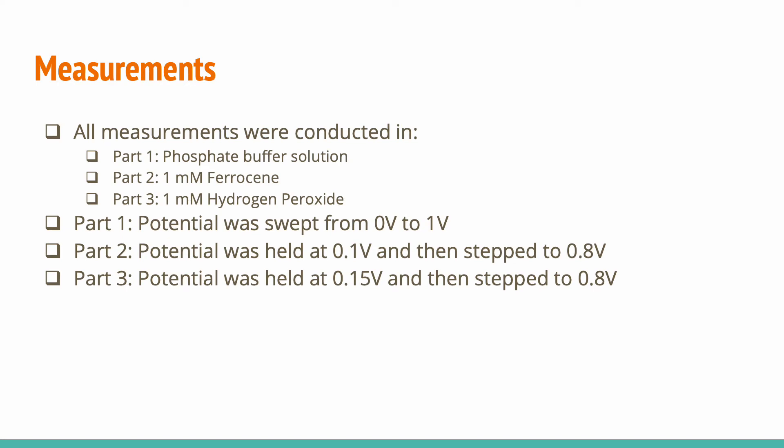For our measurements, there were three parts. For part one, we used phosphate buffer solution. For part two, we used a model one-electron transfer reaction known as ferrocene. And for part three, we used hydrogen peroxide. For part one, we swept the potential from 0 volts to 1 volt. For part two, we held the potential at 0.1 volts and then stepped it to 0.8 volts in order to obtain a response. And for part three, we held the potential at 0.15 volts and then stepped it to 0.8 volts.